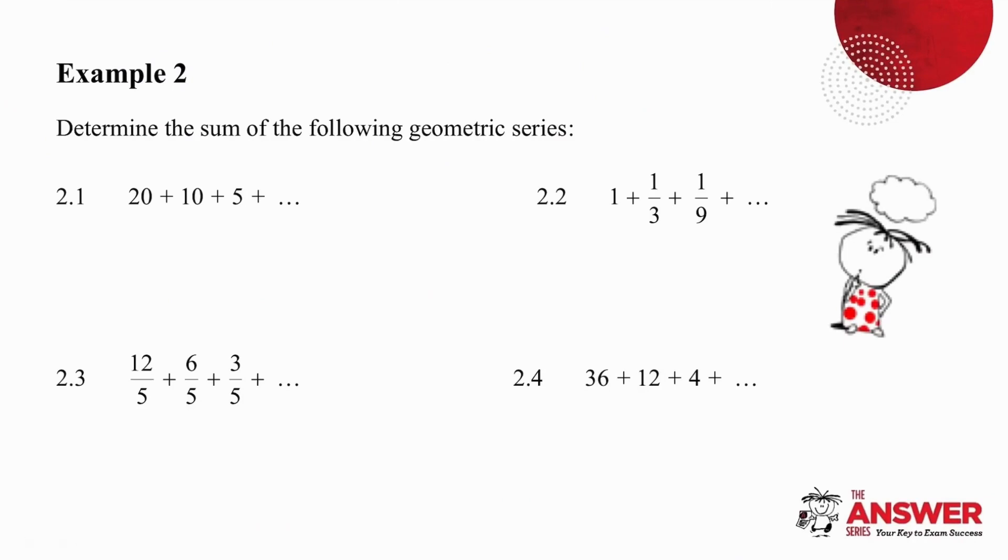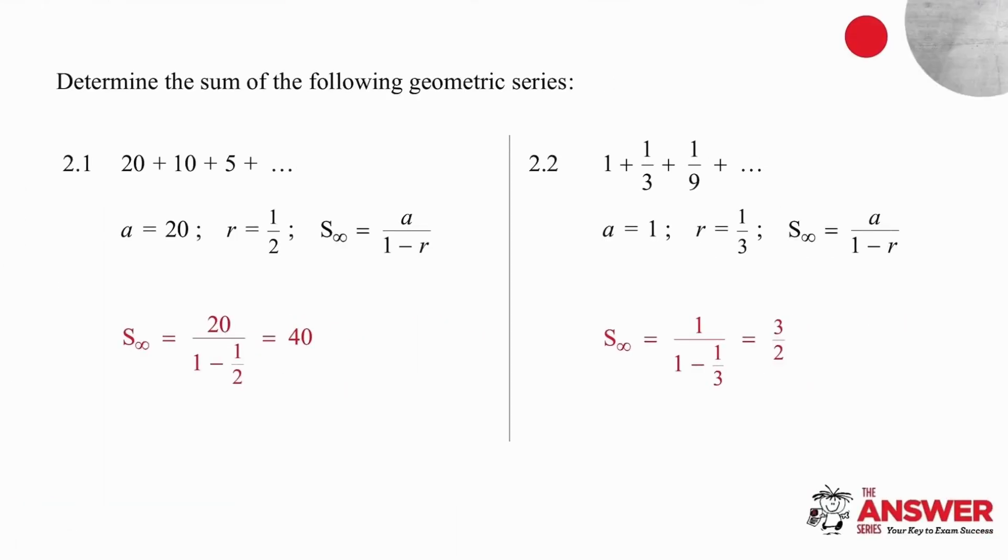There are four examples for you to apply what you understand or to see if you can do anything and then I will go through them with you. So pause the video. In each case, the first thing you do is identify the a value and the r value. And once you've done that, you simply substitute both a and r into the formula. In the first example, your answer will be 14.